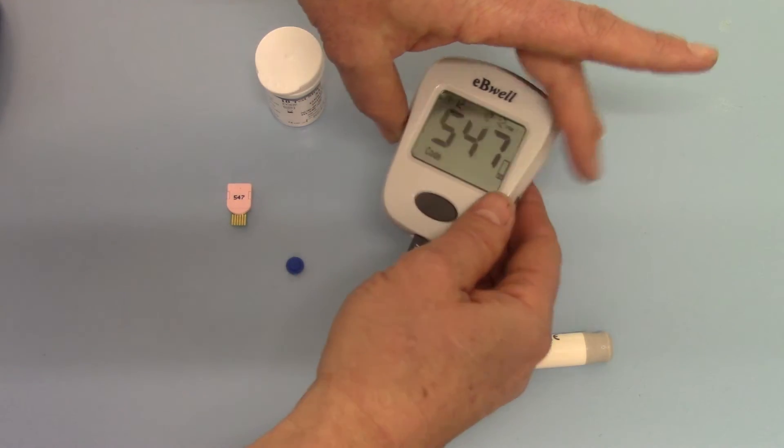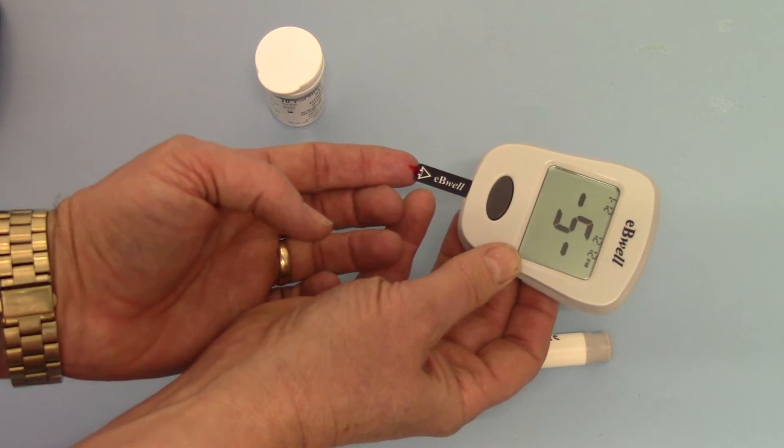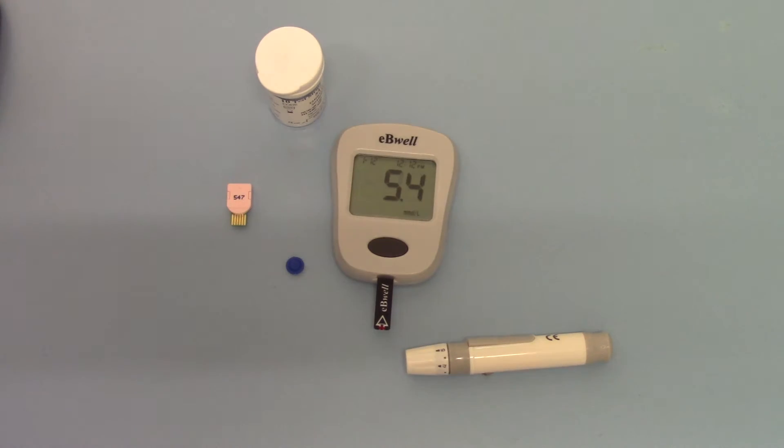To run the test you simply apply the blood sample until the meter beeps and then starts to count down. It takes about five seconds and there you have it. Your first blood glucose test result is 5.4 millimoles per liter.